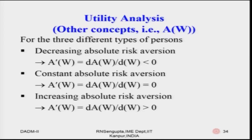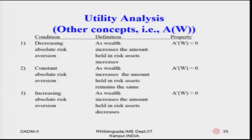For the three different types of persons already discussed: decreasing absolute risk aversion property means A prime — the differentiation of A(W) with respect to W — is less than zero; constant absolute risk aversion means A prime equals zero; and increasing absolute risk aversion means A prime is greater than zero. Now let us look at this table. In the first column we have the conditions, the second column has the definition, and the third has the mathematical properties.